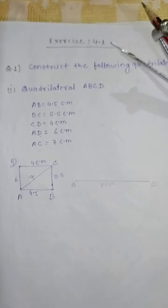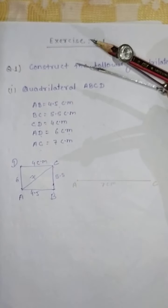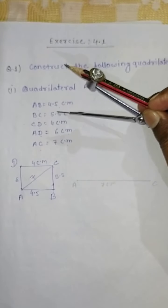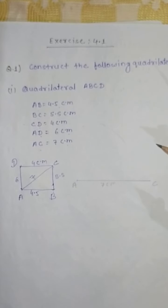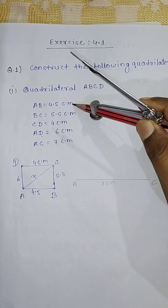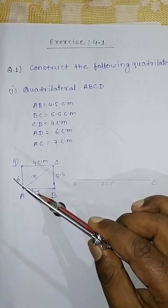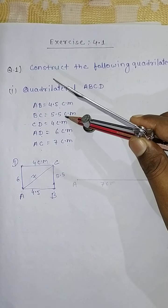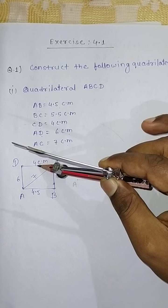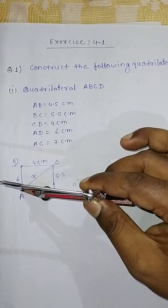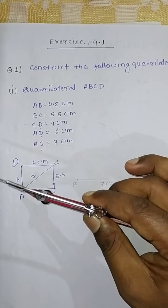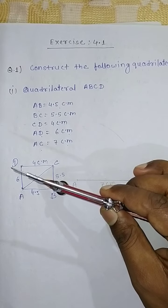Exercise 4.1 from NCERT, Question Number 1: Construct quadrilateral ABCD. Let's draw a rough sketch of quadrilateral ABCD with vertices A, B, C, and D. The given measurements are: AB equals 4.5 cm, BC equals 5.5 cm, CD equals 4 cm, AD equals 6 cm, and diagonal AC equals 7 cm. First of all, draw diagonal AC of 7 cm.